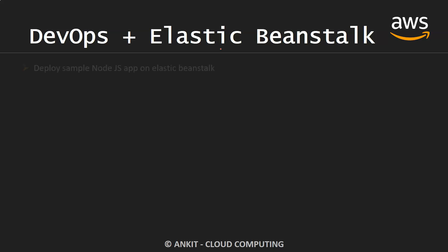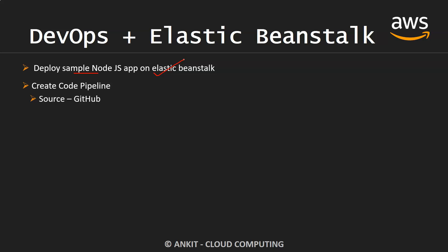So what are the steps involved? First we are going to deploy a simple sample app available on AWS documentation — a Node.js based application — on Elastic Beanstalk. Then we'll dive into creating a code pipeline where we are going to use GitHub as a source. We'll skip the code build step because in this particular case no specific build step is required, and eventually we are going to deploy to Beanstalk, automating the complete flow.